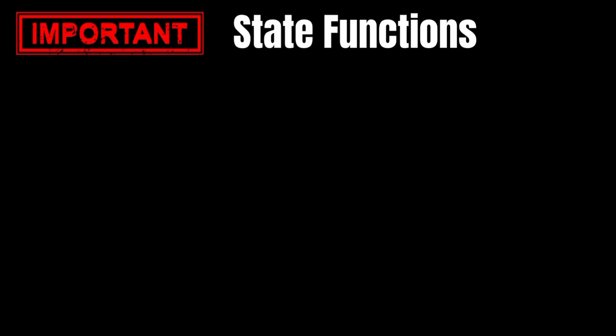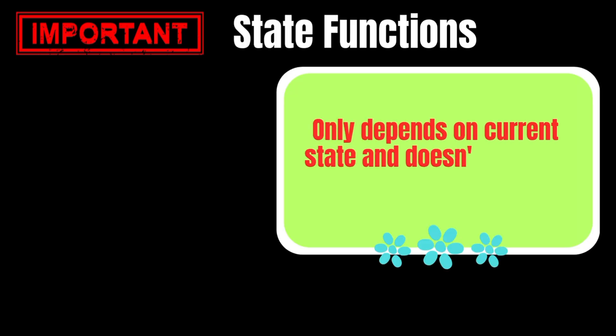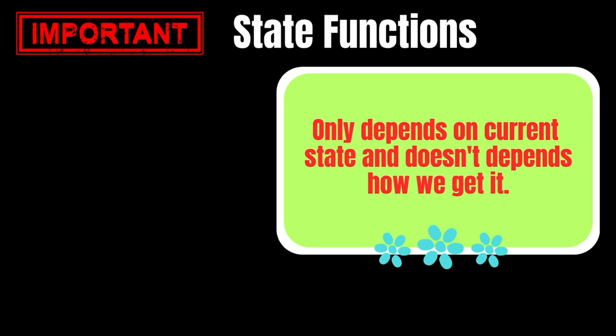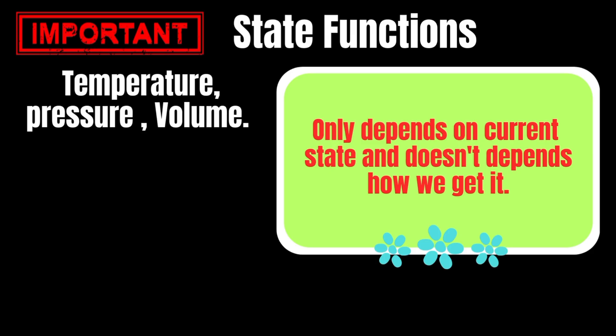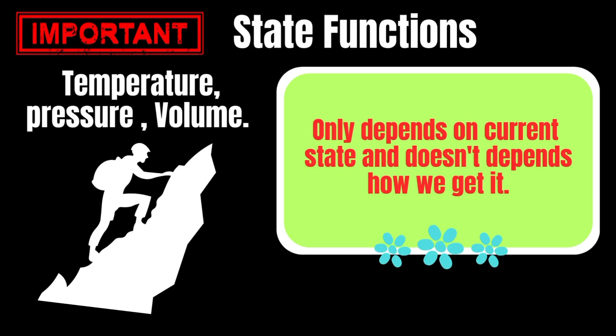Another important concept is state functions. A state function is a property that depends only on the current state of a system, not on how it got there. No matter how we reach a certain condition, the value of the state function remains the same. Some common state functions are temperature, pressure, and volume. For example, imagine you climb a mountain — your height above sea level is a state function. It doesn't matter whether you took a straight path or a winding one; the final height remains the same.